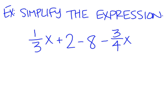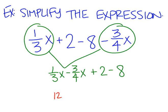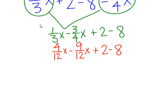Another example of simplifying: we have 1 third x and negative 3 fourths x. Using the commutative property, reorder to 1 third x minus 3 fourths x, then plus 2 minus 8. We need common denominators, so rewrite out of 12: 1 third becomes 4 twelfths, and 3 fourths becomes 9 twelfths. So 4 twelfths x minus 9 twelfths x is negative 5 twelfths x. Then positive 2 minus 8 is negative 6. So we get negative 5 twelfths x minus 6.